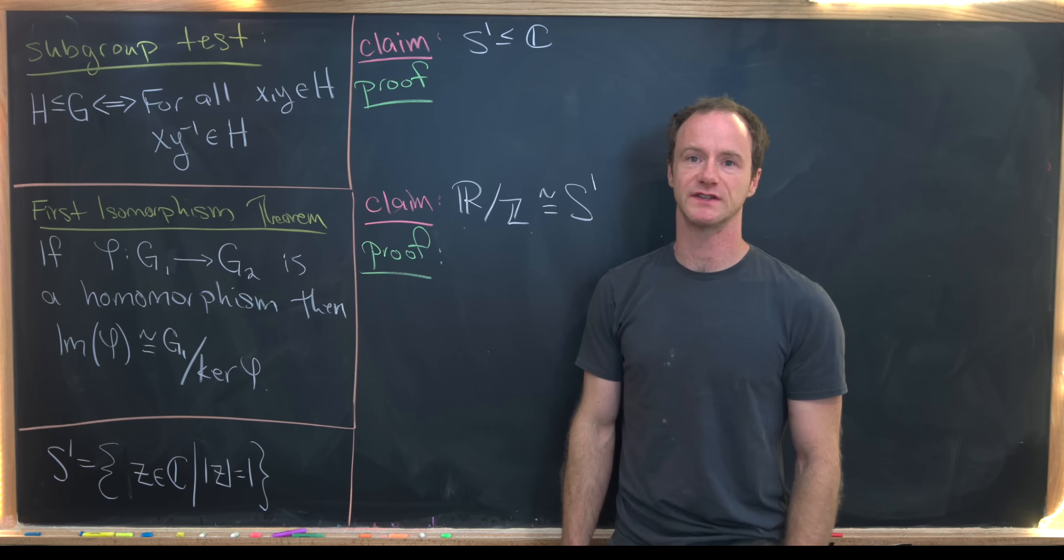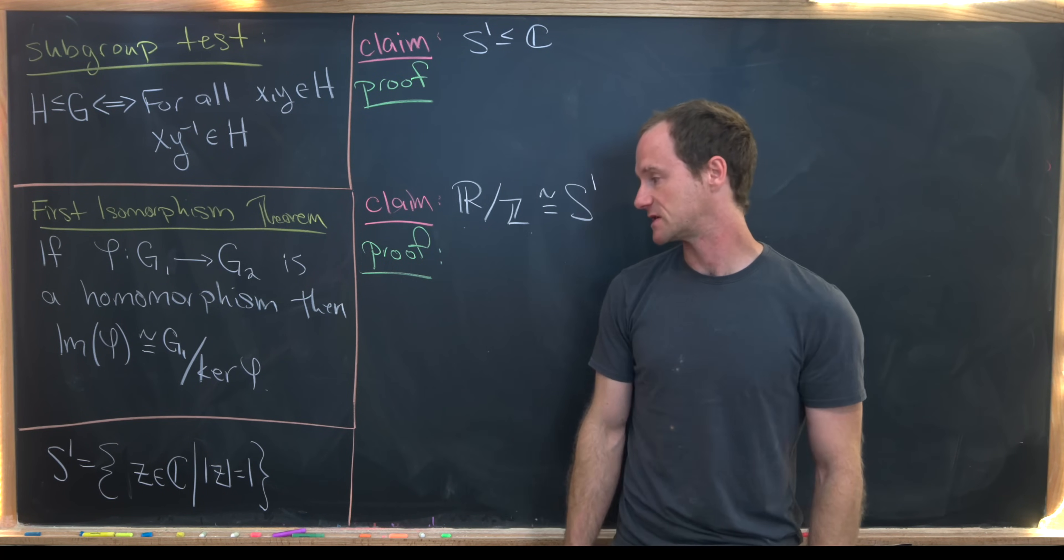Then let's recall that the kernel is always a normal subgroup. So this right hand side always makes sense.